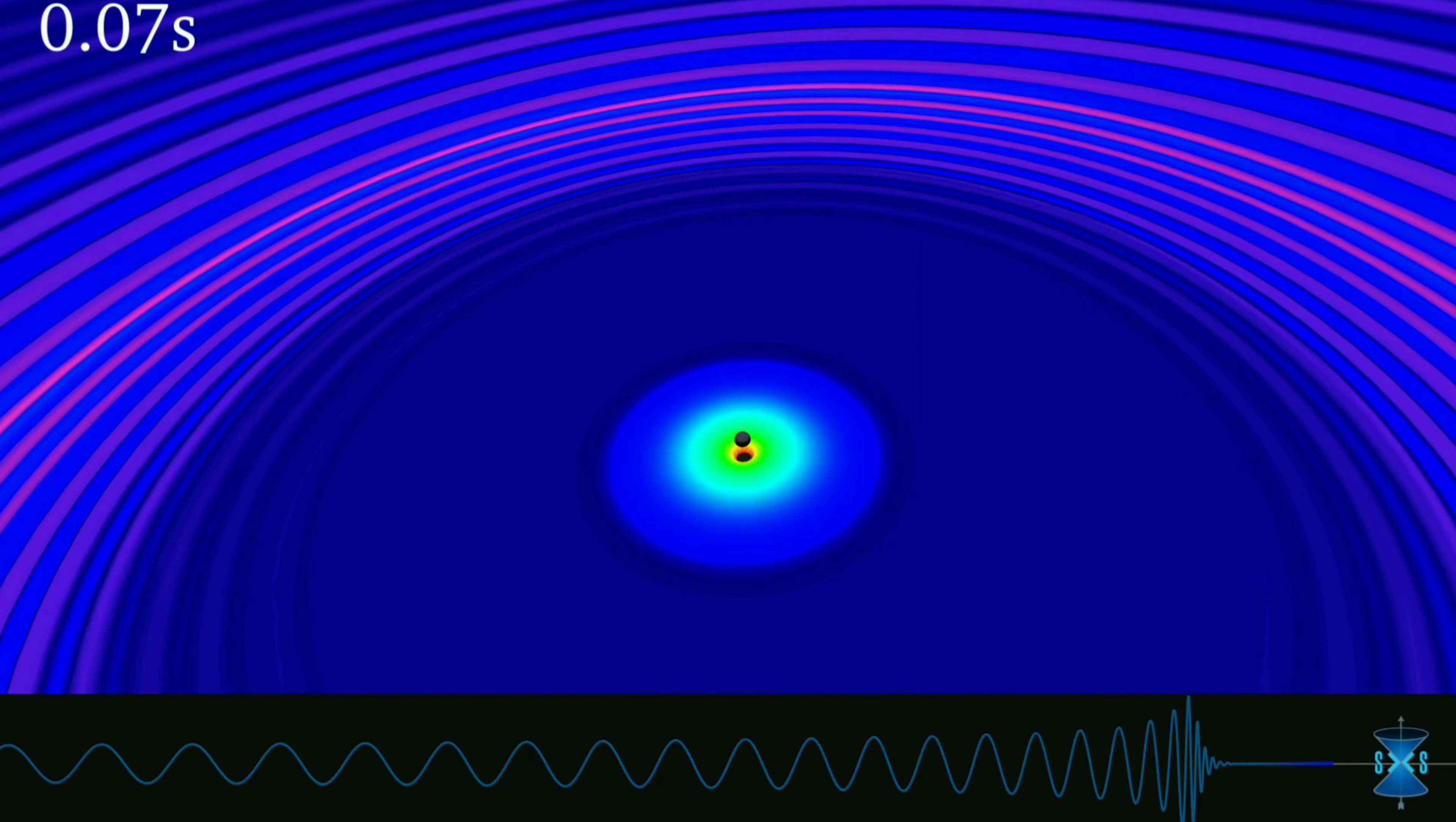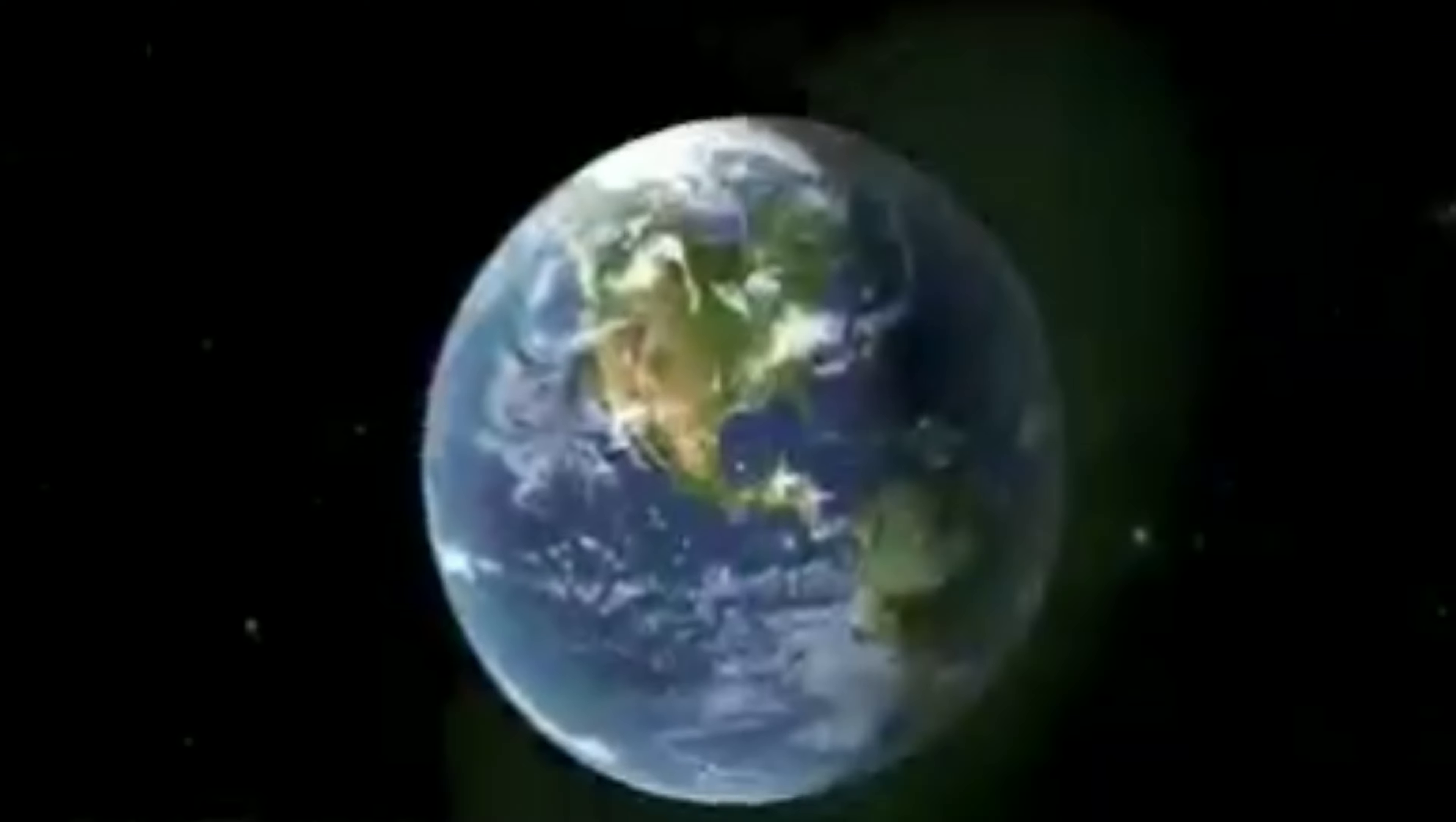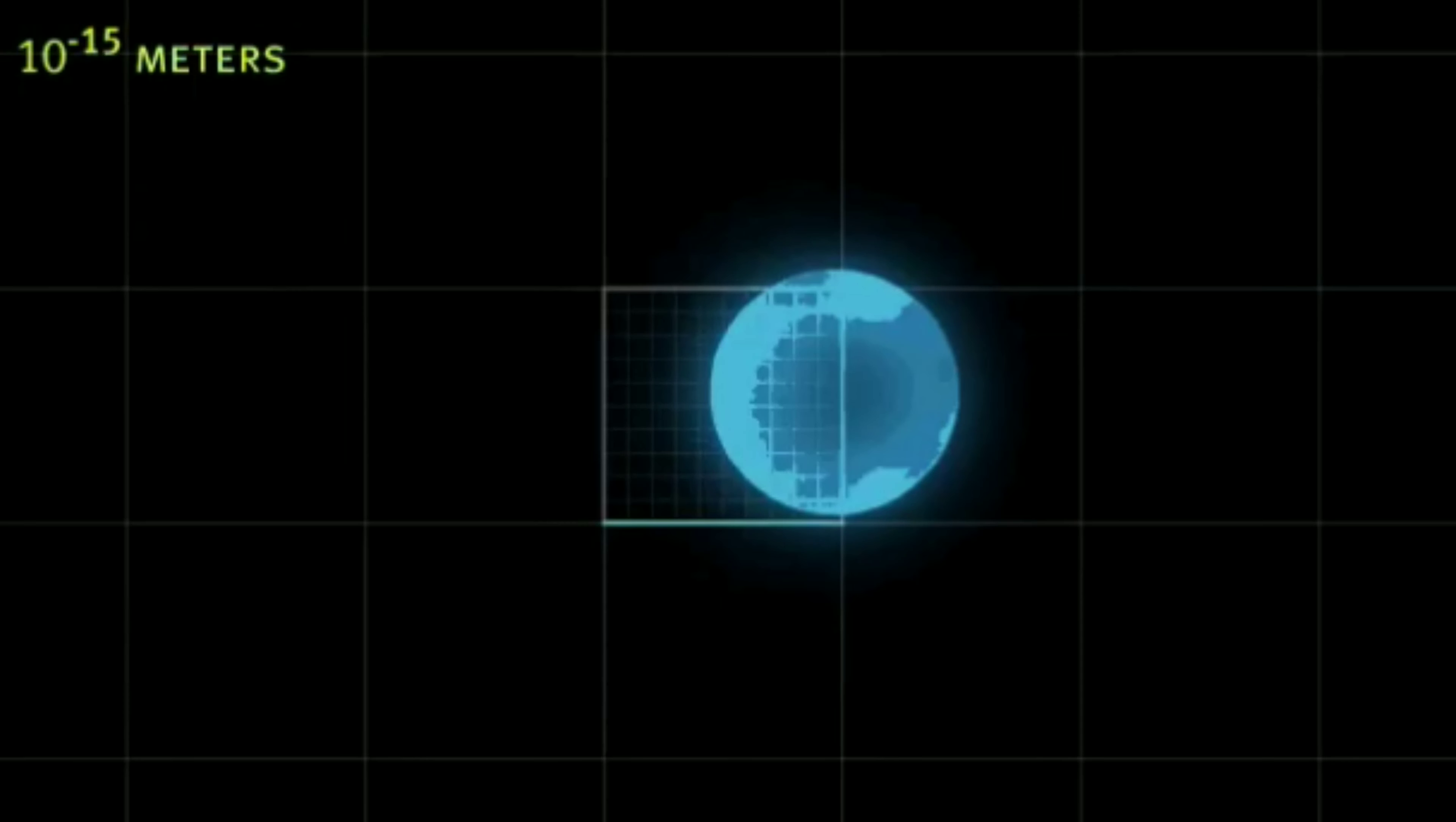So when these gravitational waves pass through the Earth, there would be some change in the size of Earth because of the change in the distortion of space-time. The Earth would be squeezed from up and down and stretched from sideways.